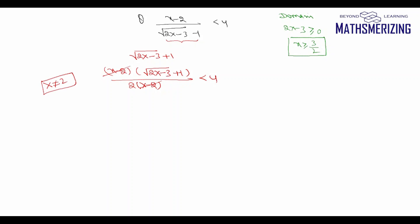So now if I solve it, I'll get √(2x - 3) + 1 is less than 8. √(2x - 3) is less than 7.